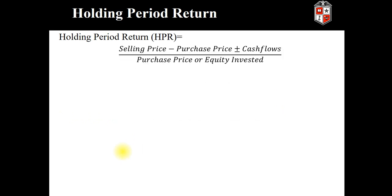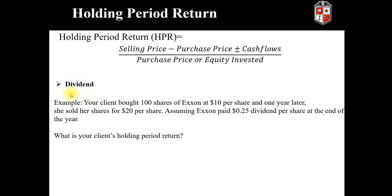Now let's take a look at an example where we have cash flows — specifically a dividend. Under the same set of circumstances, the client purchases 100 shares of Exxon at $10 a share and then sells those shares for $20 a share. However, we're going to assume that Exxon pays a $0.25 dividend per share at the end of the year. Now let's calculate the client's holding period return. Please pause the video and attempt to arrive at a solution.